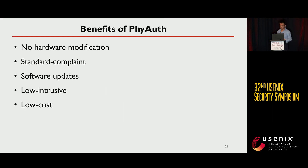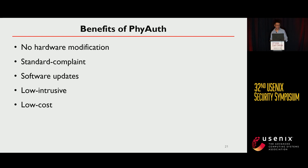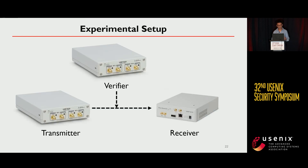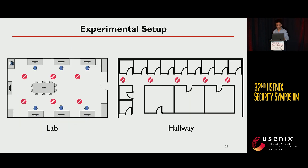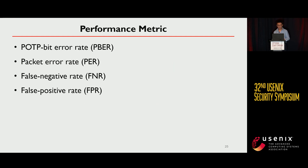The benefits of our scheme are as follows: no hardware modification is required, our scheme is standards-compliant, only software updates are needed, and the impact on normal data transmission is very limited, so the cost is very low. We also conduct experiments using USRP software-defined radio devices in our lab, in a hallway, and in other environments, using metrics including PPER, PER, FNR, and FPR to evaluate the scheme.